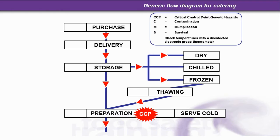There are no other critical control points thus far. A critical control point is the last line of defence — it's the stage at which, after the critical control point, the product goes to the customer and is out of our control. Looking at the labels: C tells us that contamination can occur at purchase; multiplication can occur during delivery, storage, preparation and thawing, because M is related to temperature control or temperature abuse. Contamination can also occur at any stage in the process.